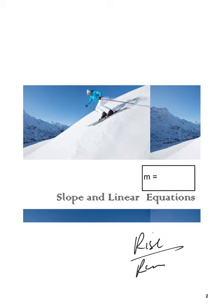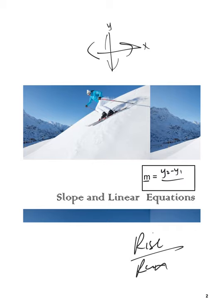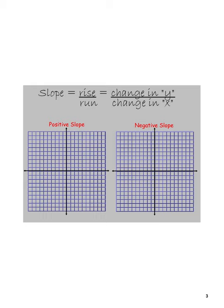Slope is denoted by the letter m. The rise is the change in y's on a graph — y goes up and down, x goes left and right. So slope is rise over run, which is (y2 - y1) / (x2 - x1). It doesn't matter which points you call 'one' or 'two,' but you must be consistent — the twos should come from the same point and the ones from the same point. Don't mix them up.